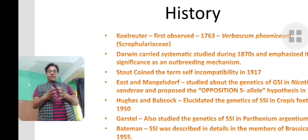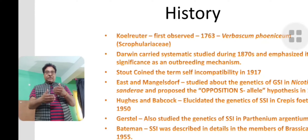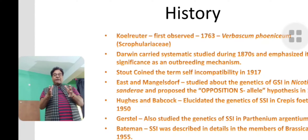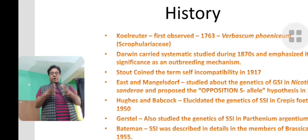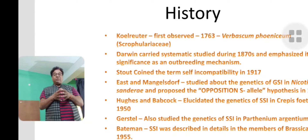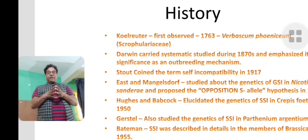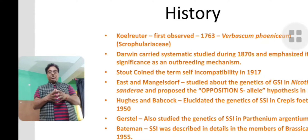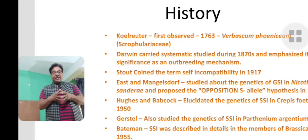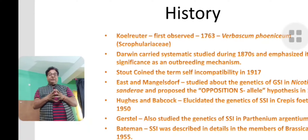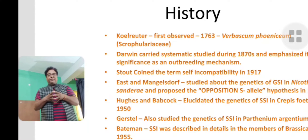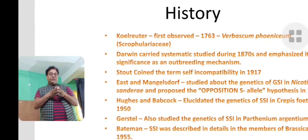Darwin, during 1876–77, studied this in a more elaborate manner and established it as an outbreeding process. Later in 1917, the term 'self-incompatibility' was introduced by Stout. Then in 1925 the S allele concept — specifically the opposition S allele concept — was developed by East and Mangelsdorf based on their studies on Nicotiana sanderi, a solanaceous family plant. In 1950, Huggies and Babcock studied a compositae/asteraceae family plant called Crepus foetida and found the opposition S allele operating there, but determined by the sporophytic plant — hence sporophytic self-incompatibility.